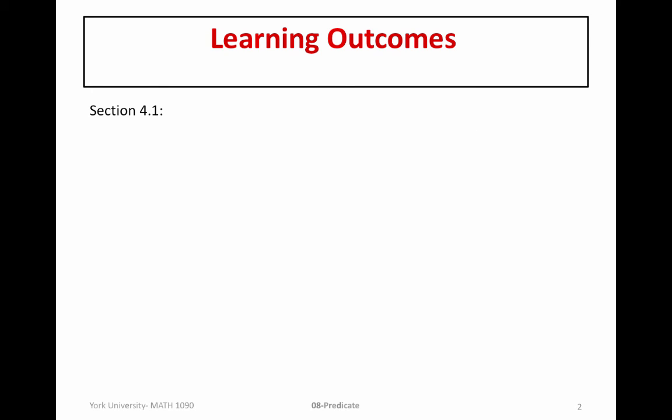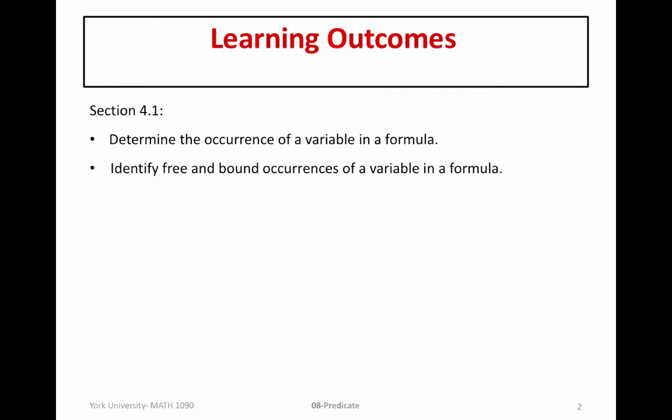So let's talk about the learning outcomes. The ones covered in this video for section 4.1 include being able to determine the occurrence of a variable in a formula. The definition of occurrence that we had in boolean logic is the same — we simply have to identify what it means for an object variable to occur in a formula. We will also be able to identify free and bound occurrences of an object variable in a formula.